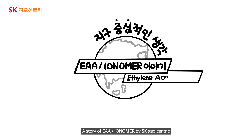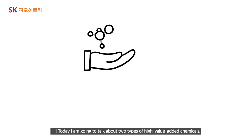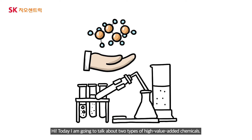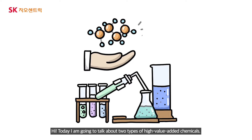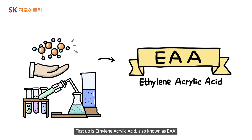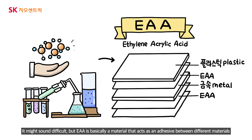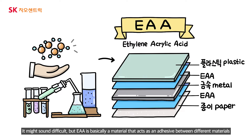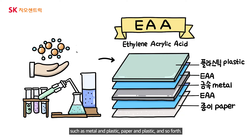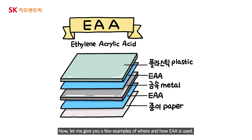A story of EAA Ionomer by SK Geocentric. Today I'm going to talk about two types of high-value added chemicals. First up is ethylene acrylic acid, also known as EAA. EAA is basically a material that acts as an adhesive between different materials such as metal and plastic, paper and plastic, and so forth. Let me give you a few examples of where and how EAA is used.